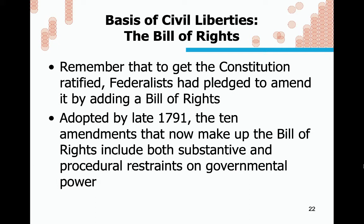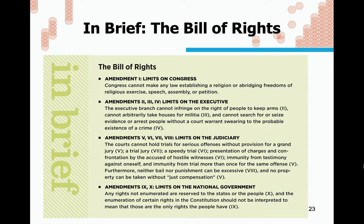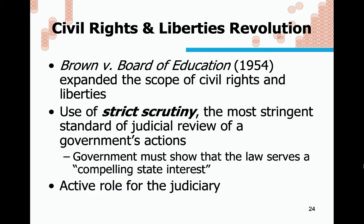The notion of civil liberties goes back to the Bill of Rights. To get the Constitution ratified, the Federalists had to pledge to amend it by adding a Bill of Rights, because the Anti-Federalists were worried about the power of the federal government. The Bill of Rights was adopted in late 1791, and the 10 amendments include both substantive and procedural restraints on government power. There's a good summary of the Bill of Rights on page 84 of the 16th edition of the textbook.